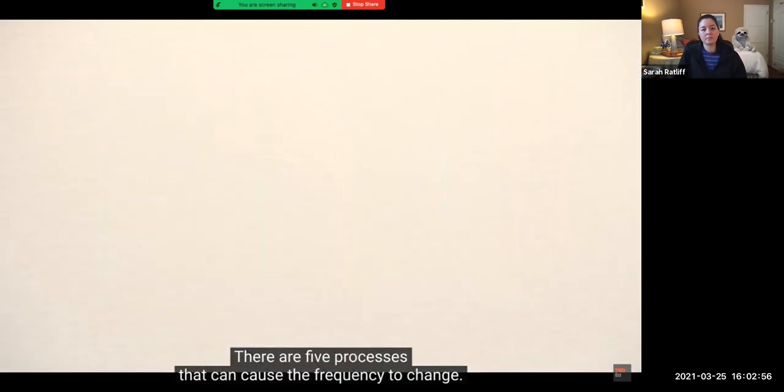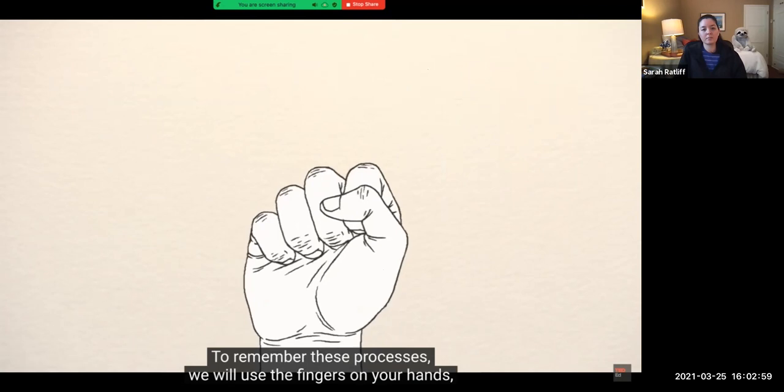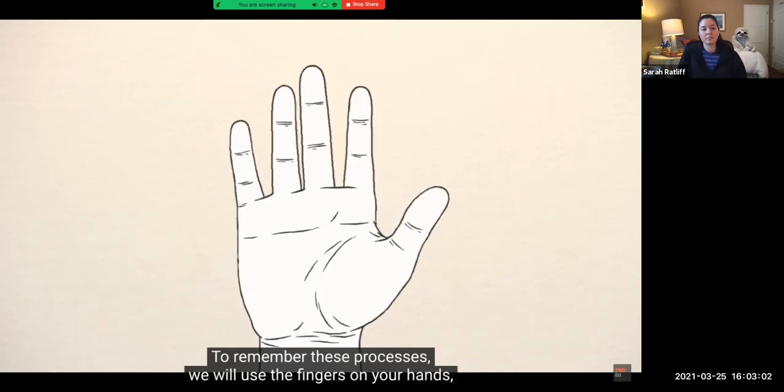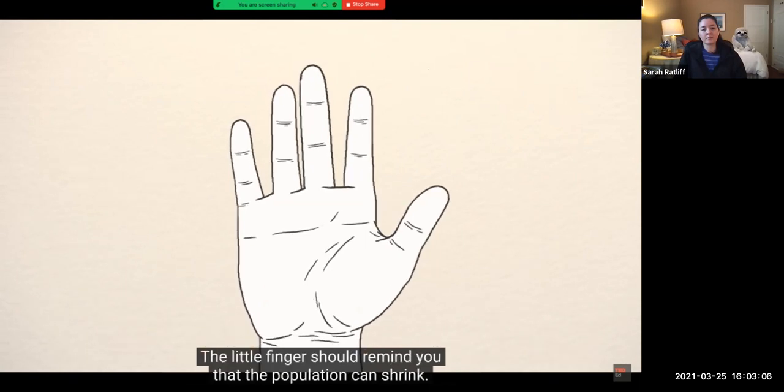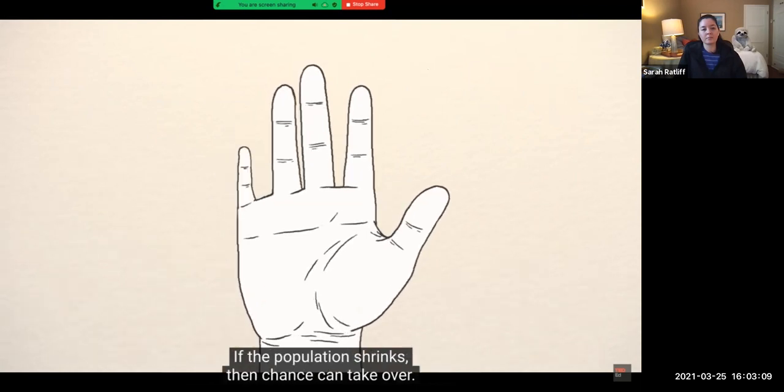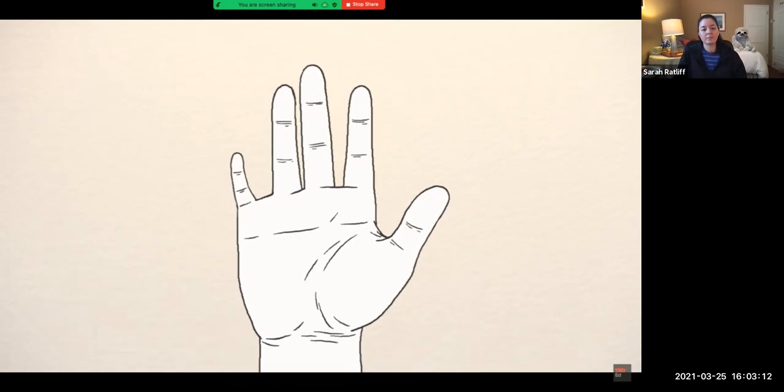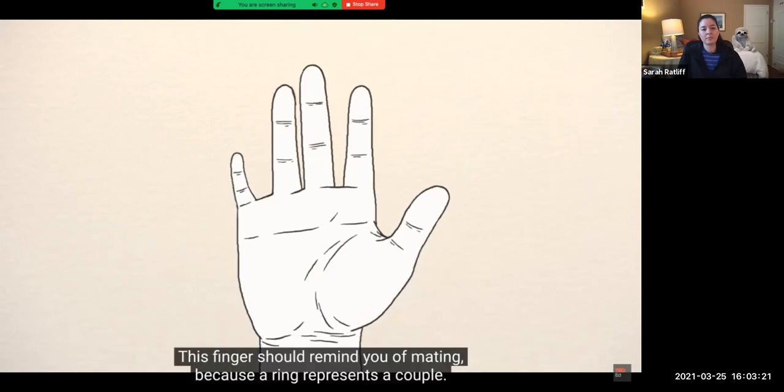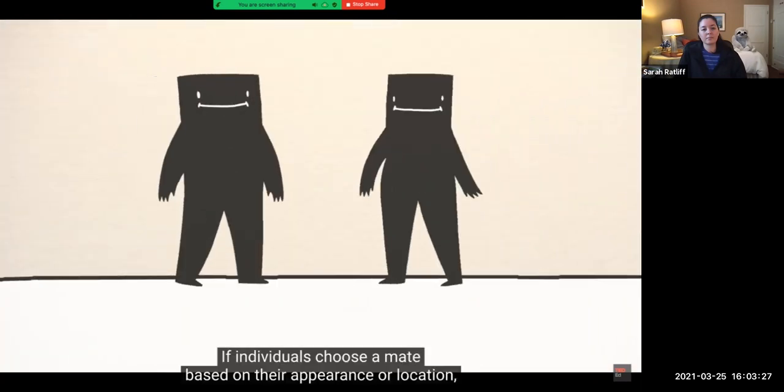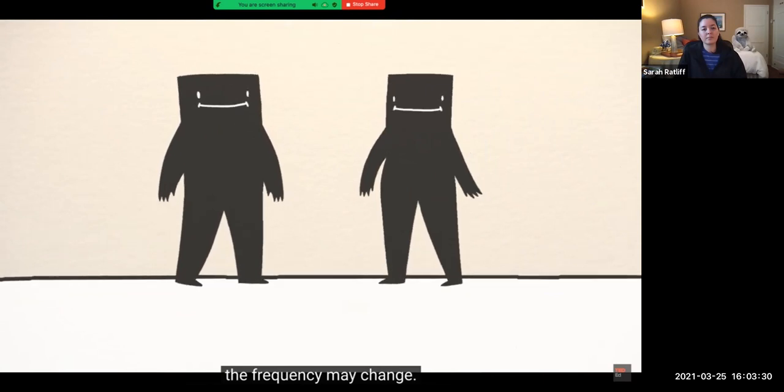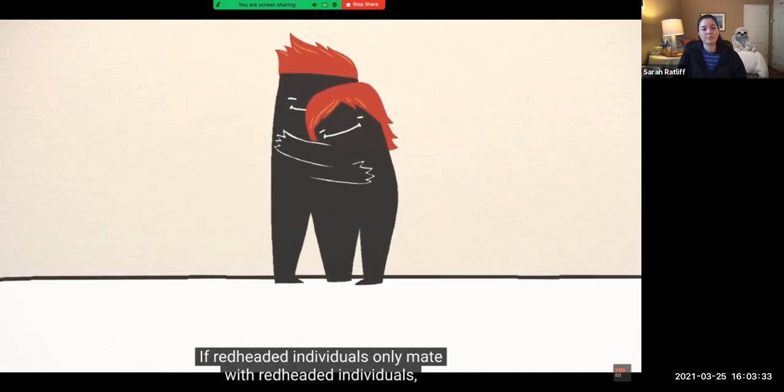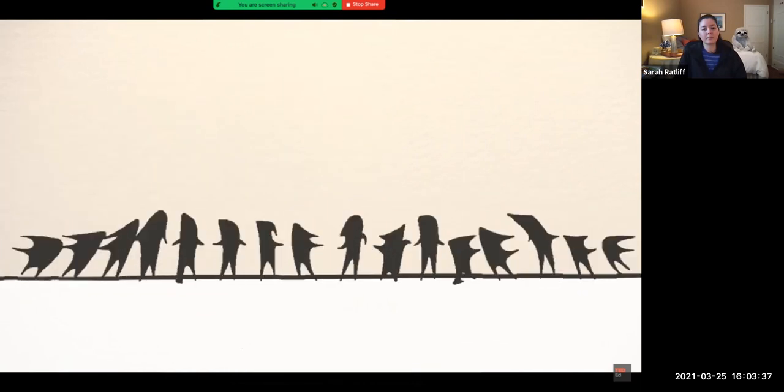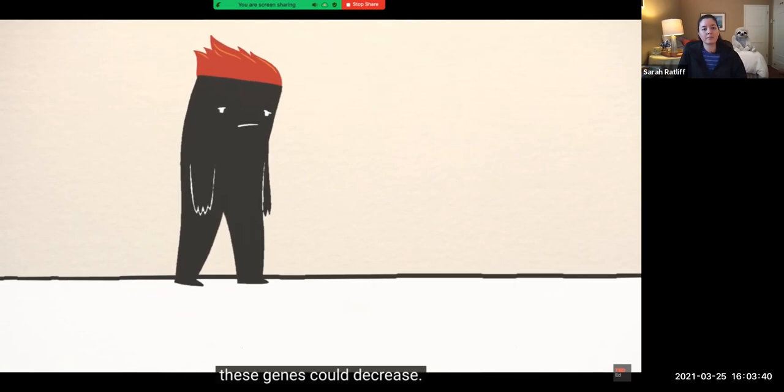There are five processes that can cause the frequency to change. To remember these processes, we will use the fingers on your hands, starting from the little finger and moving to the thumb. The little finger should remind you that the population can shrink. If the population shrinks, then chance can take over. For example, if only four individuals survive an epidemic, then their genes will represent the new gene pool. The next finger is the ring finger. This finger should remind you of mating because a ring represents a couple. If individuals choose a mate based on their appearance or location, the frequency may change. If redheaded individuals only mate with redheaded individuals, they could eventually form a new population. If no one ever mates with redheaded individuals, these genes could decrease.